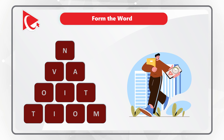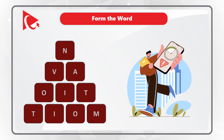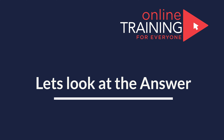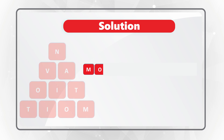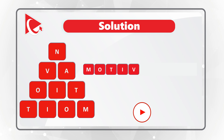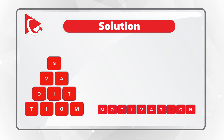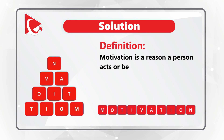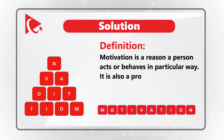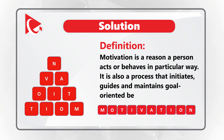Hopefully you solved it, because I am moving forward and revealing the solution. As you might have guessed, the word is motivation. Let me spell it for you: M-O-T-I-V-A-T-I-O-N. The definition of motivation is that it is a reason a person acts or behaves in a particular way. It is also a process that initiates, guides, and maintains goal-oriented behaviors.